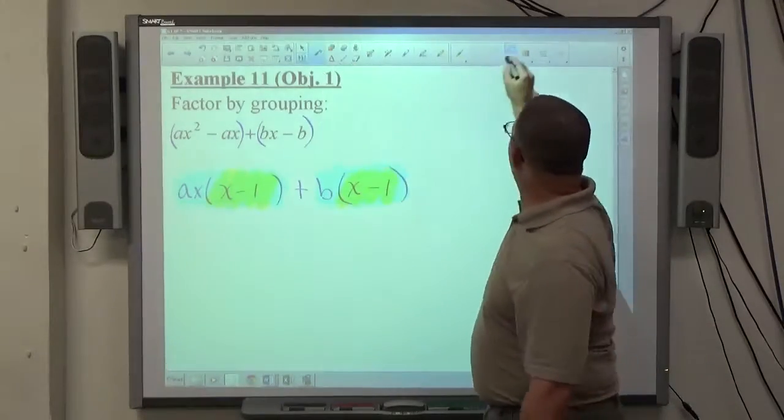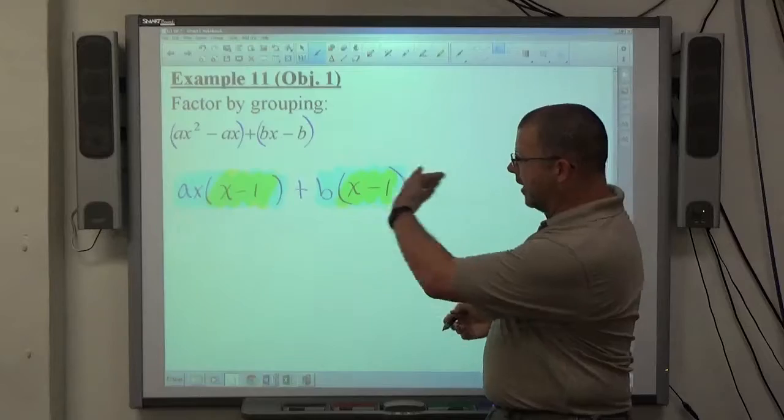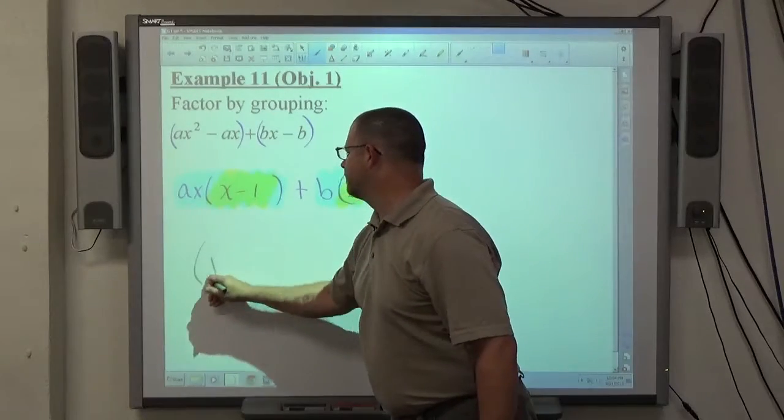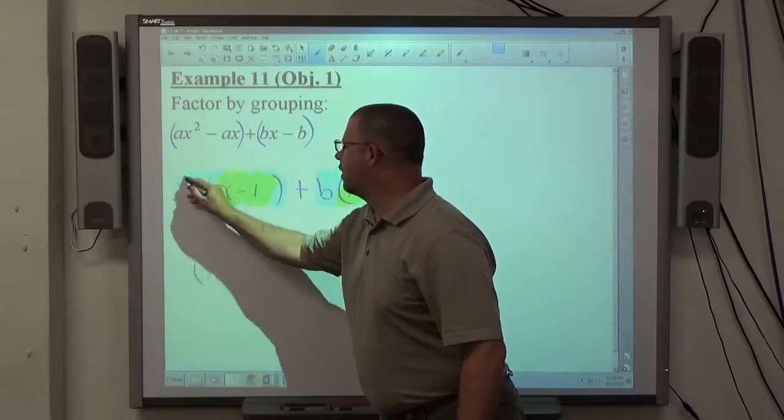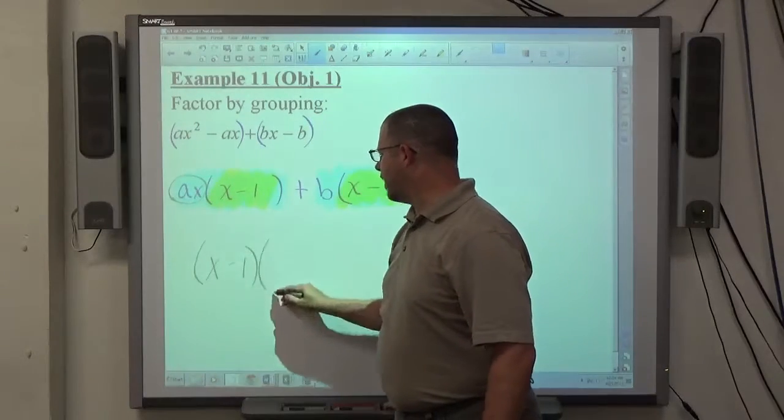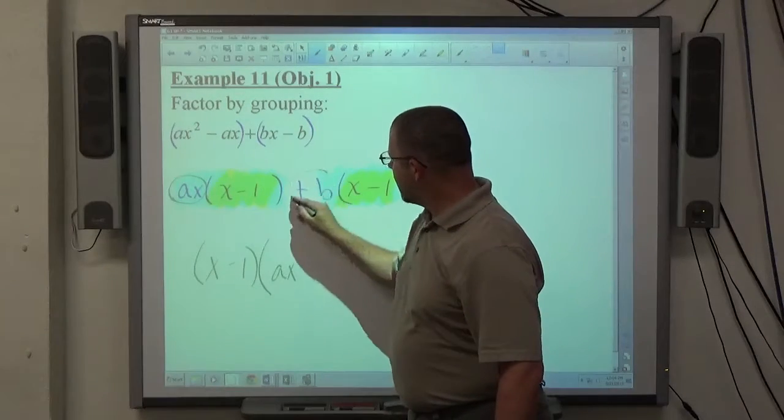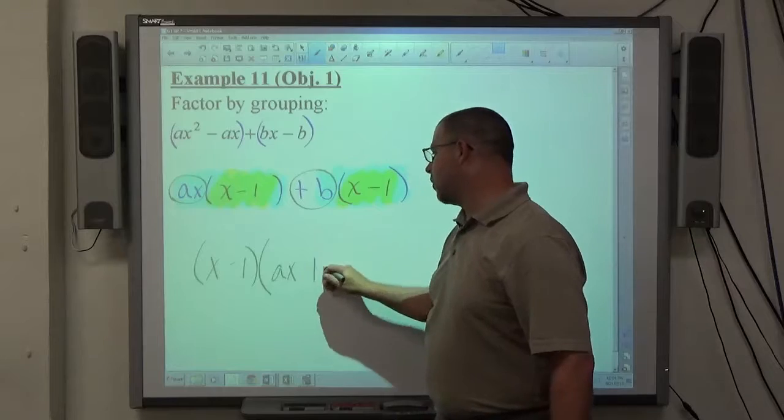So what we do then is we do one more greatest common factor. We're extracting x - 1 from each term. And we're going to be left over, if we take x - 1 out of the first term, with an ax, and x - 1 taken out of the second term leaves me with a plus b.